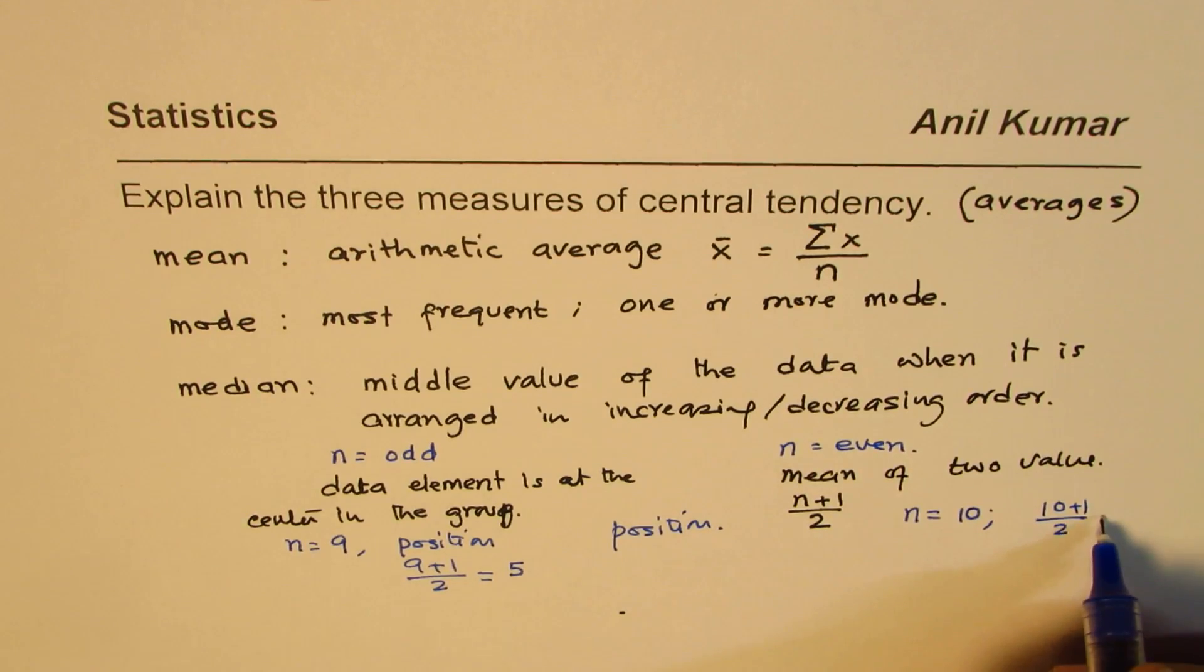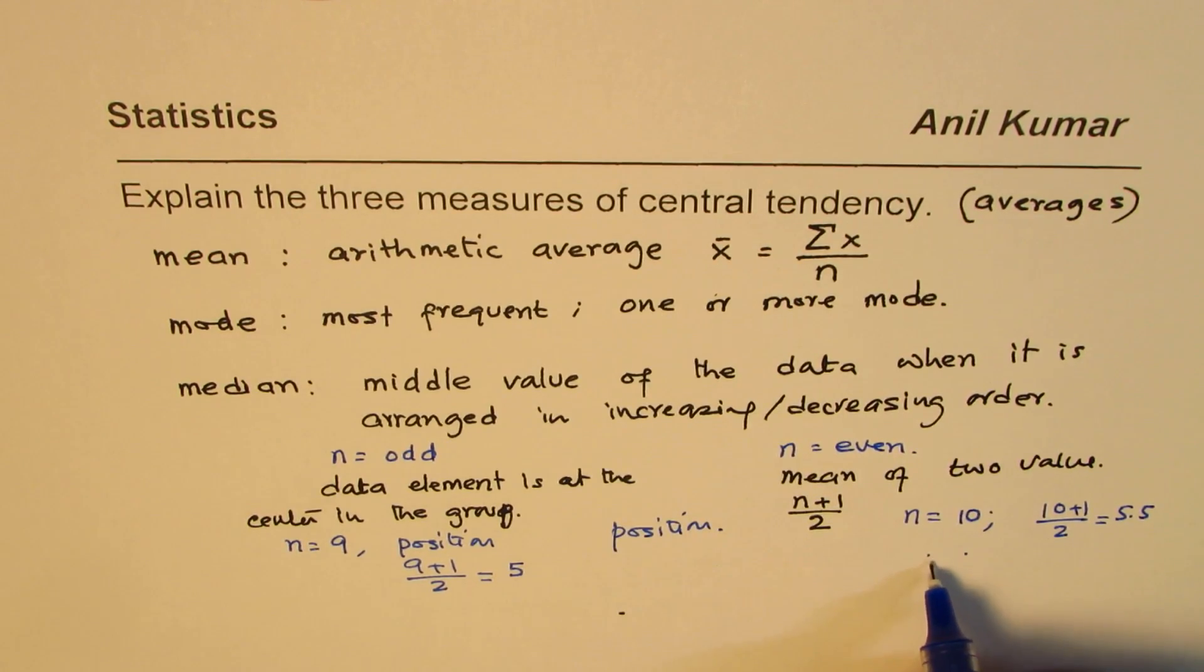But in case we have n equals 10, then 10+1 divided by 2 is 5.5. So we are looking at a position between the fifth and sixth position, midway between them. In this case, we add these two data elements and find their average by dividing by 2. That is how you find the median when you have an even number of values.